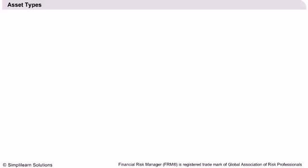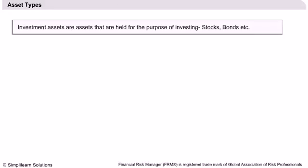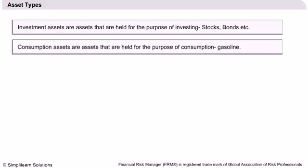Asset Types. Investment assets are assets that are held for the purpose of investing. For example, different investors hold stocks, bonds, etc. for the sake of investment. Consumption assets are assets that are held for the purpose of consumption. Examples of consumption assets include commodities such as oil and natural gas.